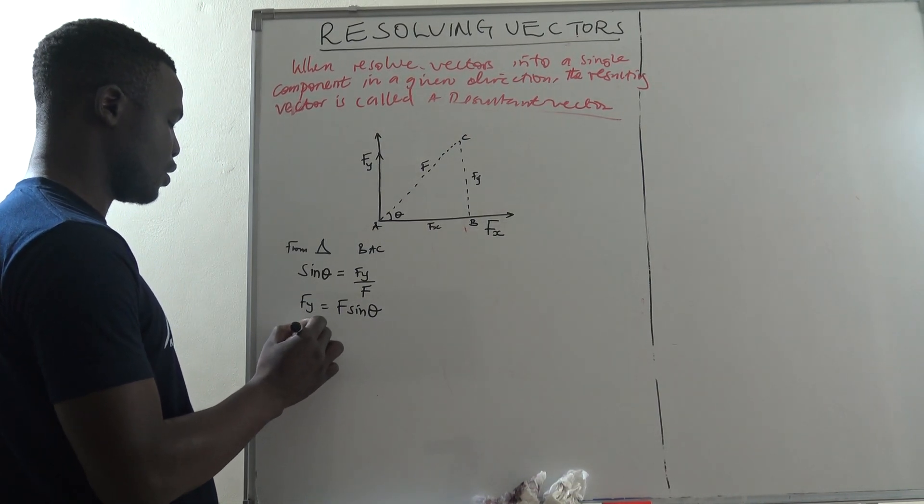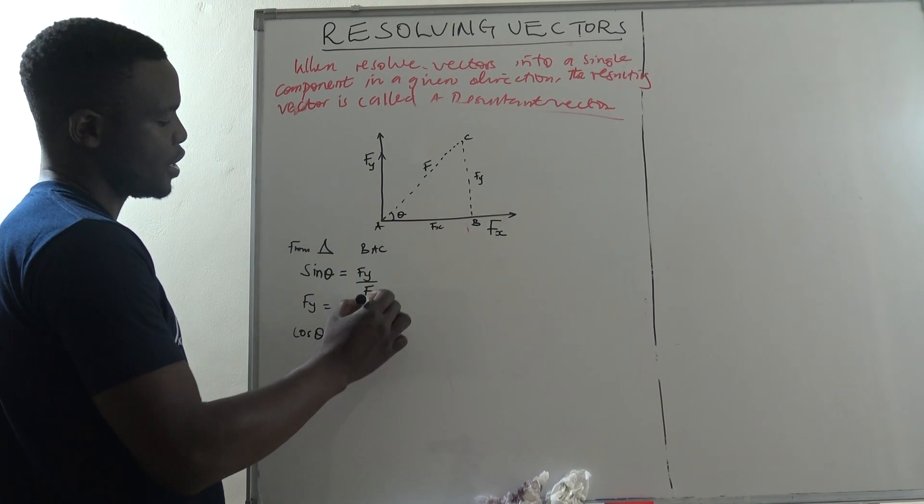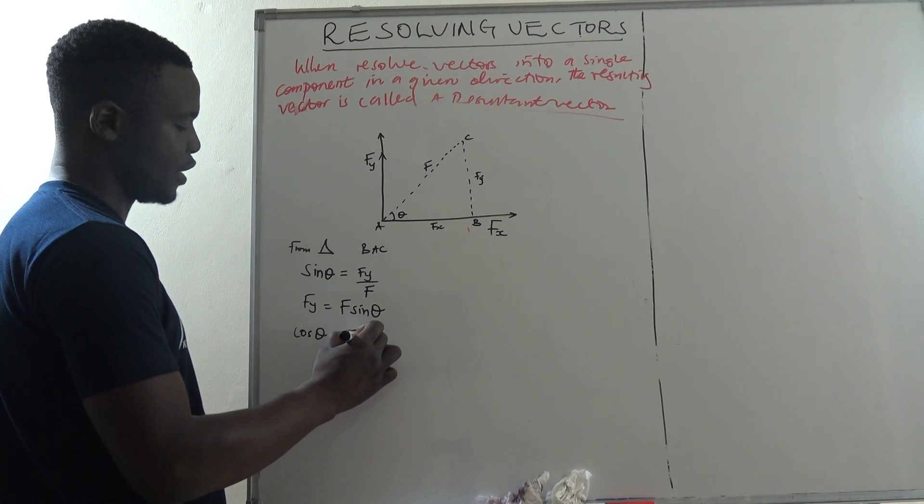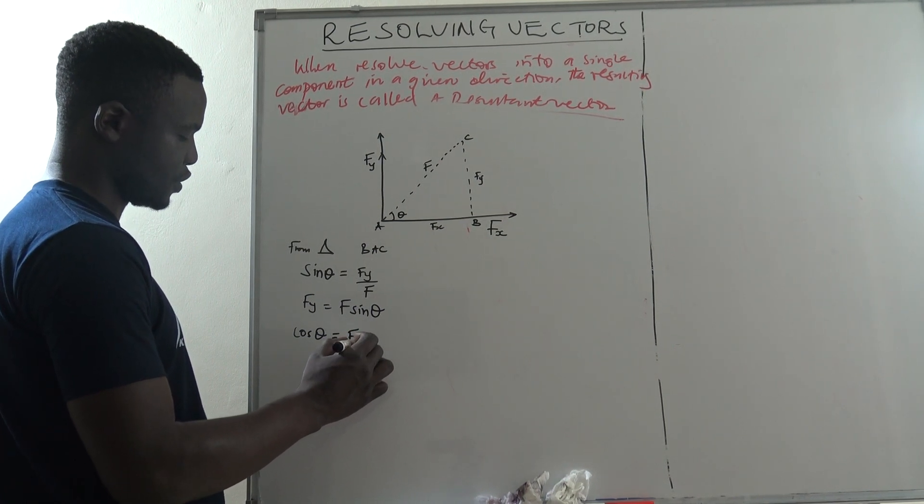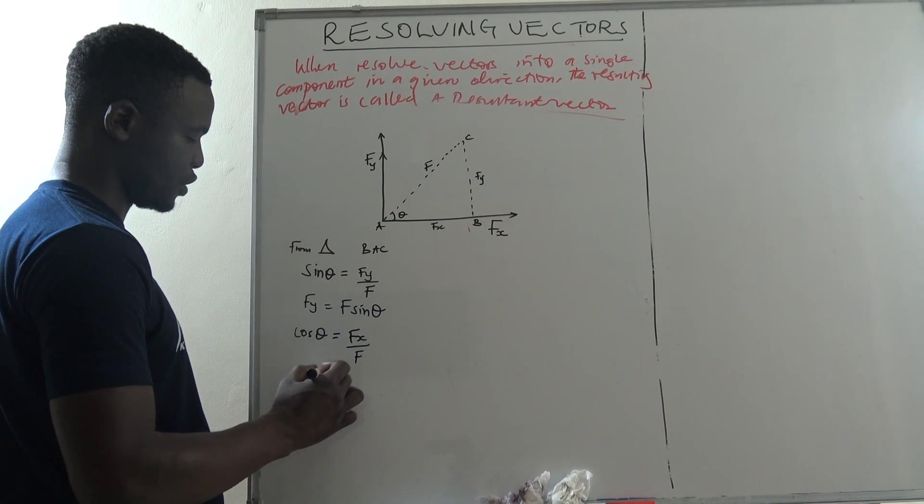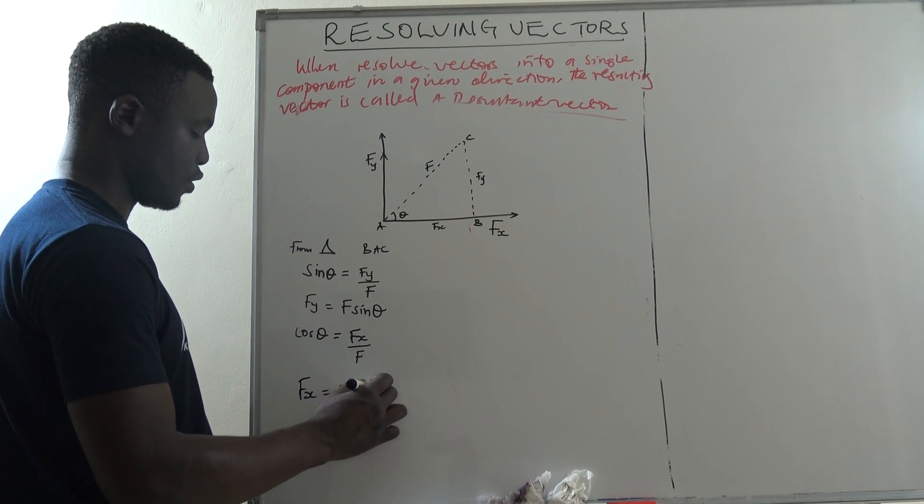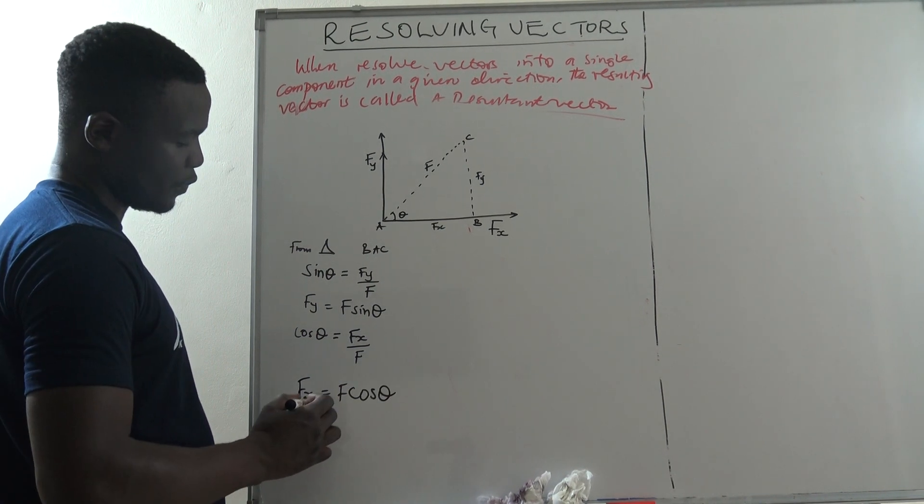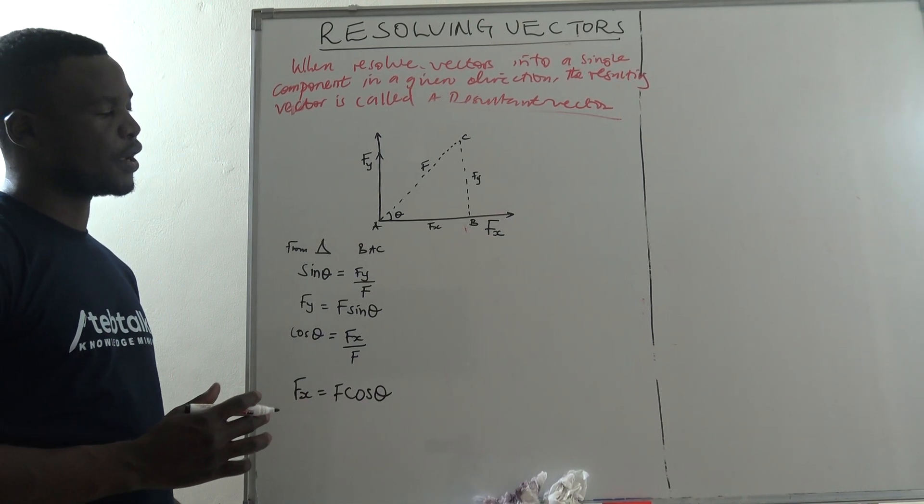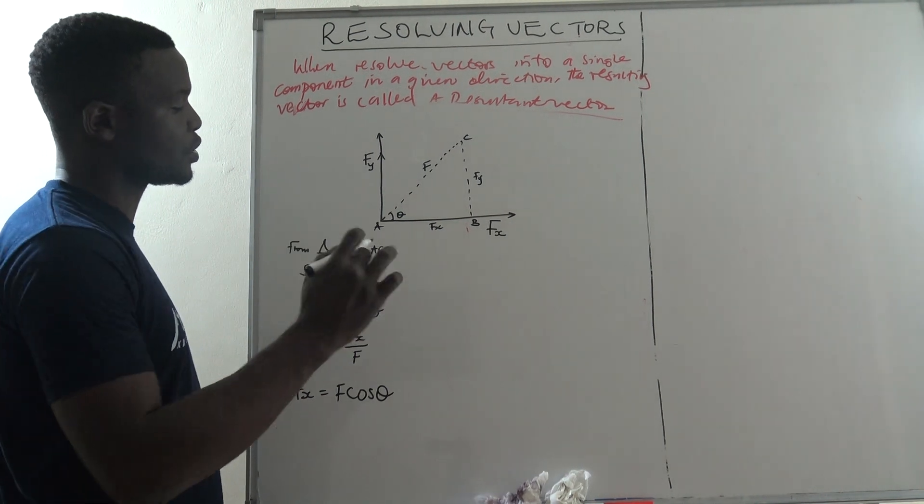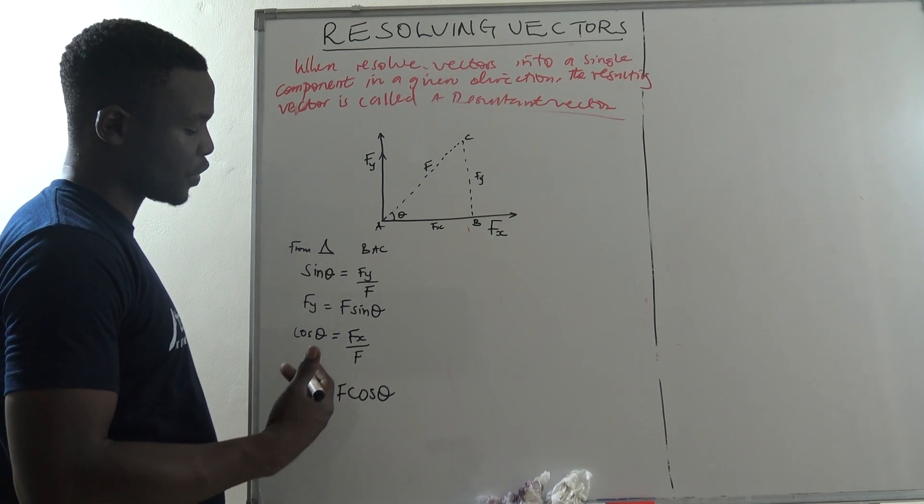Let's also consider cosine theta. We know that cos theta is adjacent over hypotenuse. Therefore, Fx is equal to F cos theta. So now, when we are resolving horizontally, if we need to get the component of any force in the horizontal direction, then we get it from F cos theta.